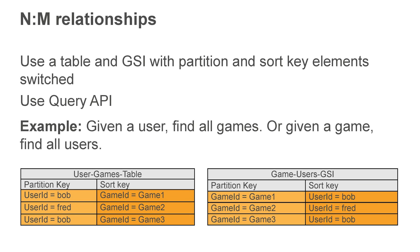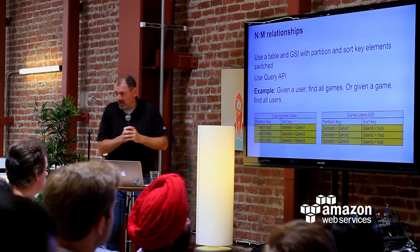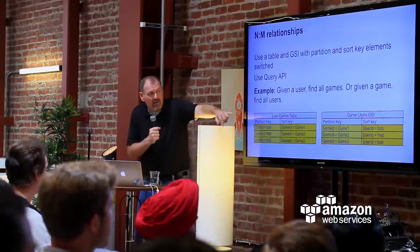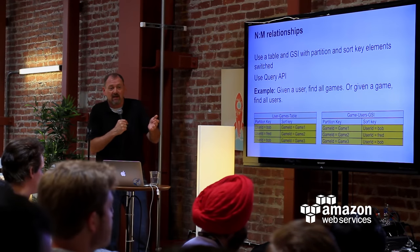For many-to-many relationships, use a partition sort key and flip them around. In an online gaming example: a user-games table partitioned on user ID, sorted on game ID. A game-users table flips those — partition key is game ID, sort key is user ID. Query the game ID to get all users playing that game; query the user table to see what games they play. This supports workflows like matchmaking — what games do you play, what's your skill level — that gaming companies create quite frequently.